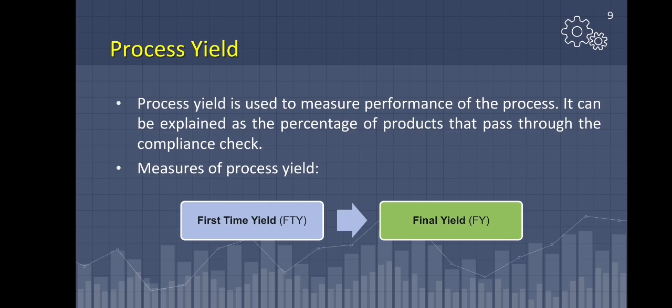Many businesses use two types of process yield measures: first time yield and final yield. These businesses frequently discover high yield rates and assume their processes are running efficiently and effectively. Both metrics represent the traditional approach to calculating process yield and do not take into account factors such as rework and delays.